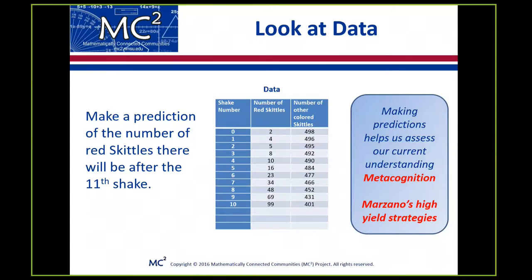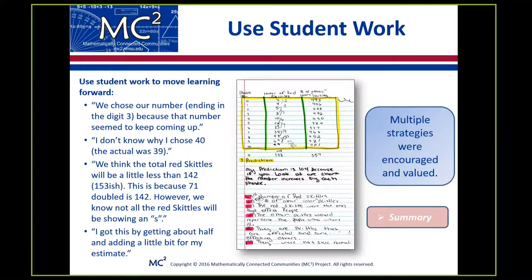Having seen the simulation setup, here's some data obtained from it — it's in your handouts on page three. Use this data to make an estimate of how many red Skittles there will be on the 11th shake. Here's some student work along with responses to the questions we asked. What can you learn about student thinking from their responses? One teacher looked at these responses and chose to have her groups share out in the order listed — why do you think she chose that order?